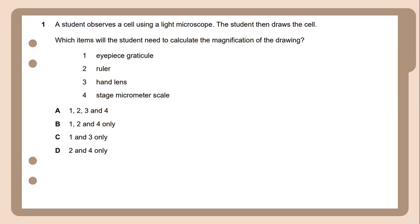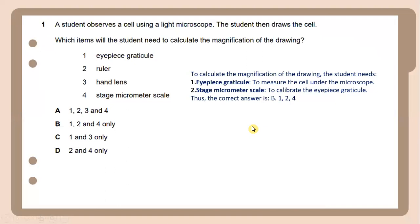Question 1. A student observed a cell using a light microscope. The student then draws the cell. Which items will the student need to calculate the magnification of the drawing? To calculate the magnification of the drawing, the student needs an eyepiece graticule to measure the cells under the microscope. And on top of that, the student also needs a stage micrometer scale which is used to calibrate the eyepiece graticule. So the correct answer for question number one is 1, 2, and 4.